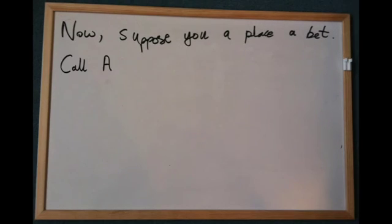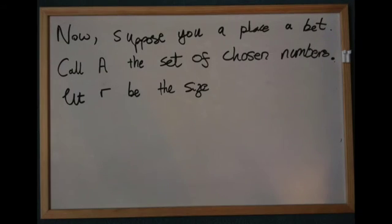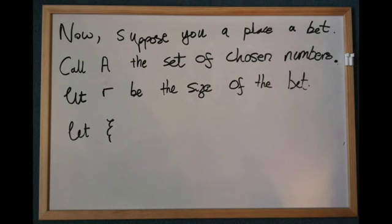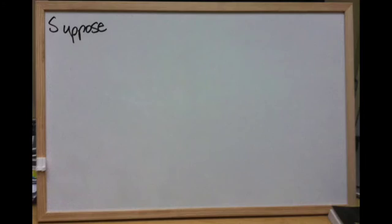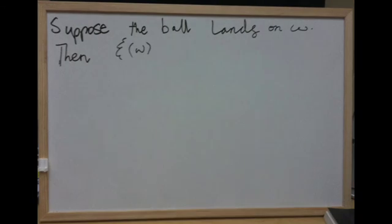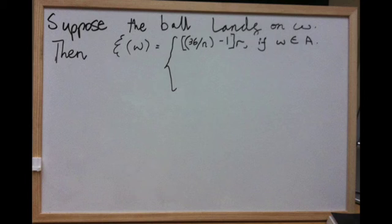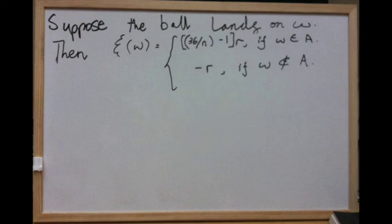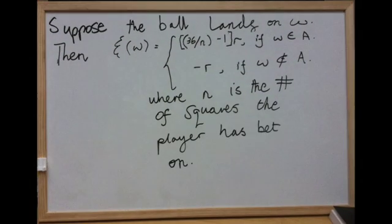Suppose you place a bet. Call A the set of chosen numbers, let R be the size of the bet, and let G determine the return of the bet. Suppose the ball lands on omega. Then G(omega), which tells us the return of this outcome, says the player receives (36 divided by N minus 1) times R if omega is an element of A, and minus R if omega is not an element of A, where N is the number of squares the player has bet on.